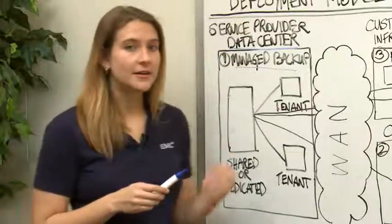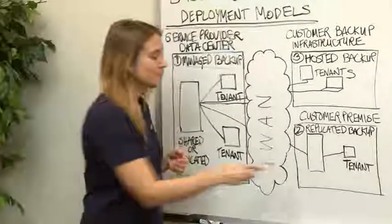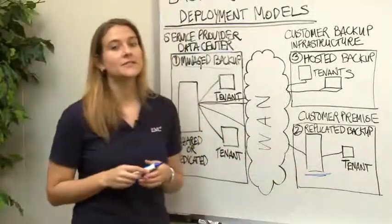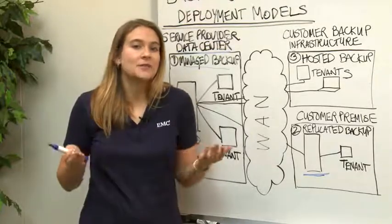The second model we'll talk about is Replicated Backup Services. This is a model where a tenant or end customer already performs backups at its local or physical site, for example, using an Avamar data store or a data domain backup appliance.